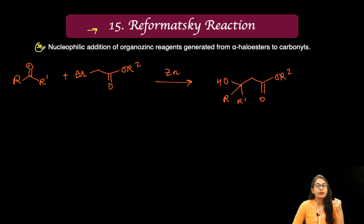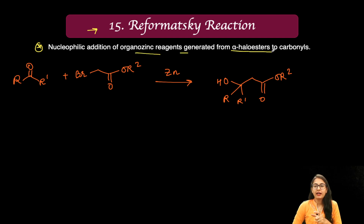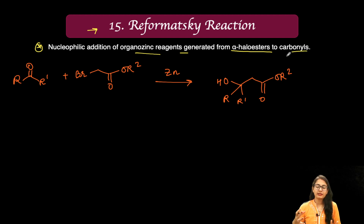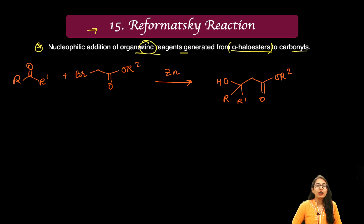The Reformatsky reaction involves nucleophilic addition of organozinc reagents, generated from alpha-haloesters, to carbonyls. What you have to identify in this reaction is first the alpha-haloester, and also whether zinc is present.